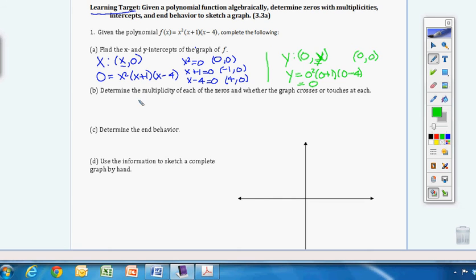Okay, so now we want to determine the multiplicity of each of the zeros and whether the graph is going to cross or touch. So we're not going to be worried about our y intercept. This is where we're now looking at our x's. So at zero, zero, that belongs to our x squared term, which has a degree of two, which is even. So at zero, zero, we're going to touch.